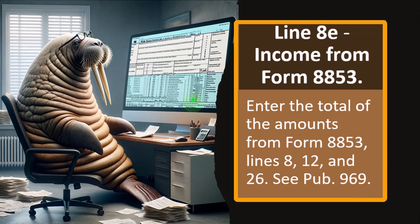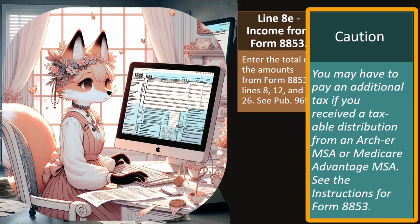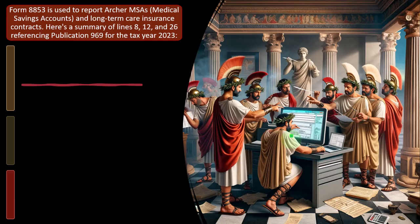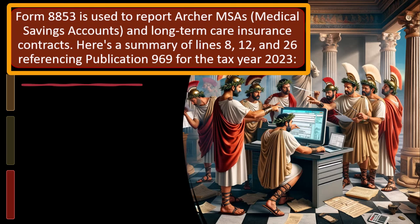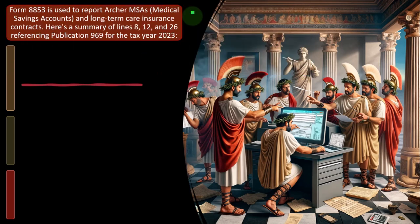Line 8E — income from Form 8853. Enter the total of the amounts from Form 8853, lines 8, 12, and 26. See Publication 969 for more information. You may have to pay an additional tax if you receive a taxable distribution from an Archer MSA or Medicare Advantage MSA. Form 8853 is used to report Archer MSAs (medical savings accounts) and long-term care insurance contracts.